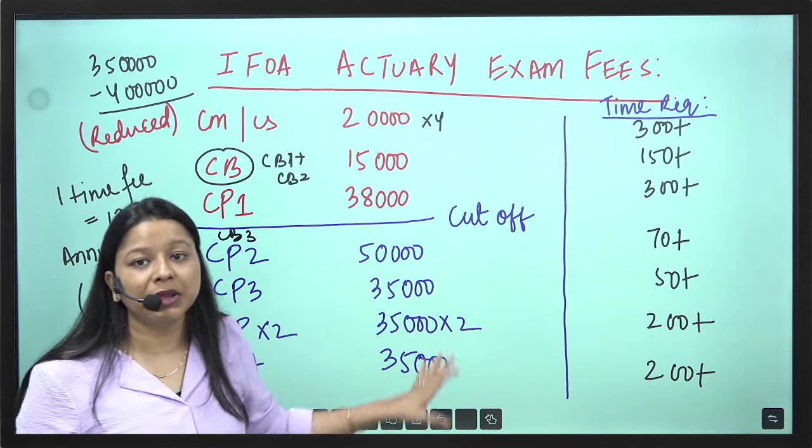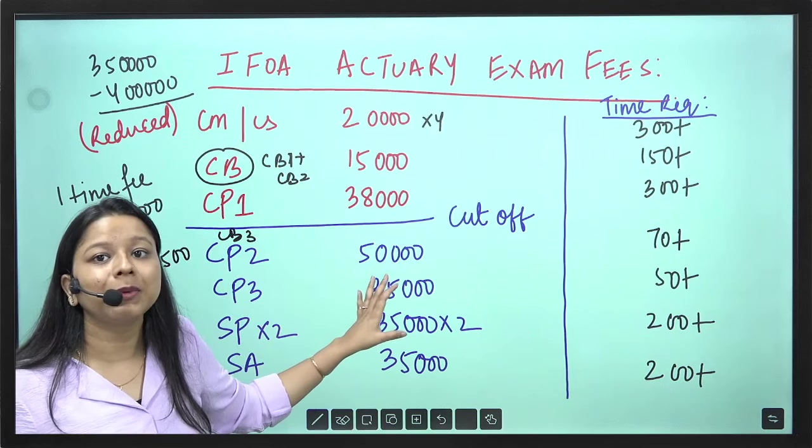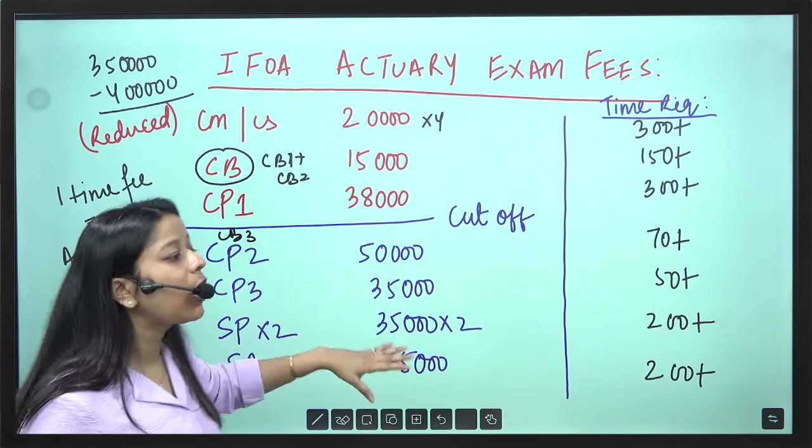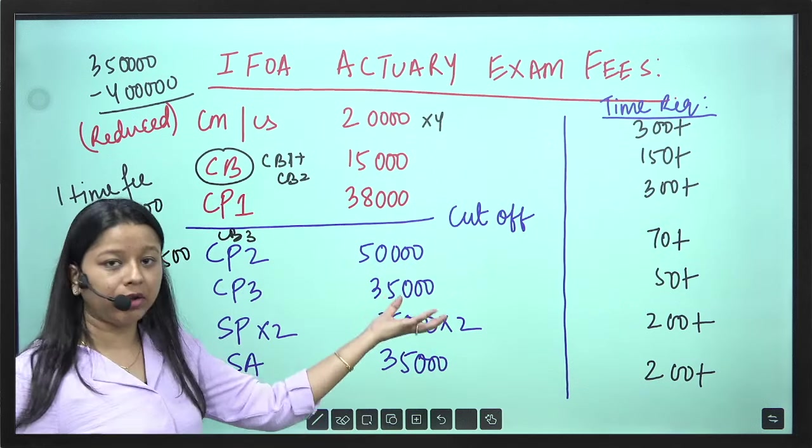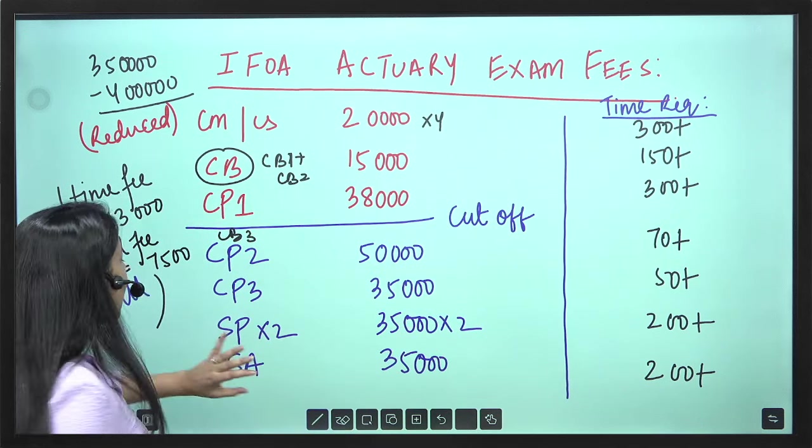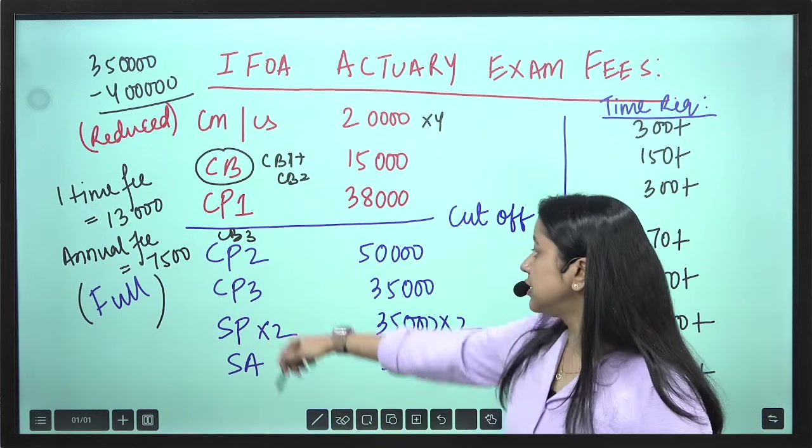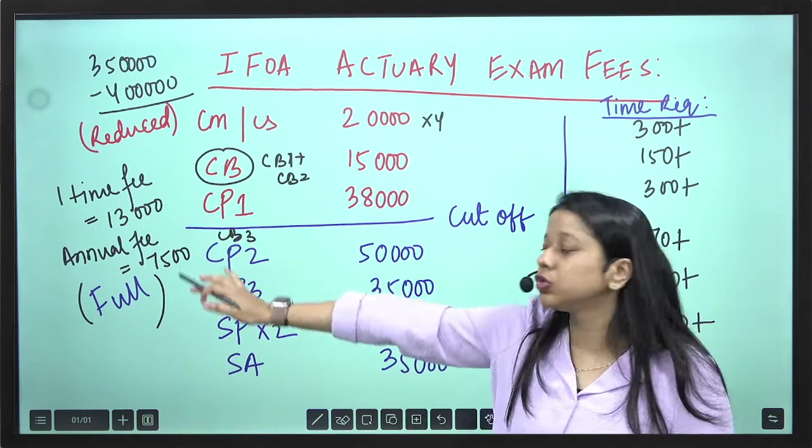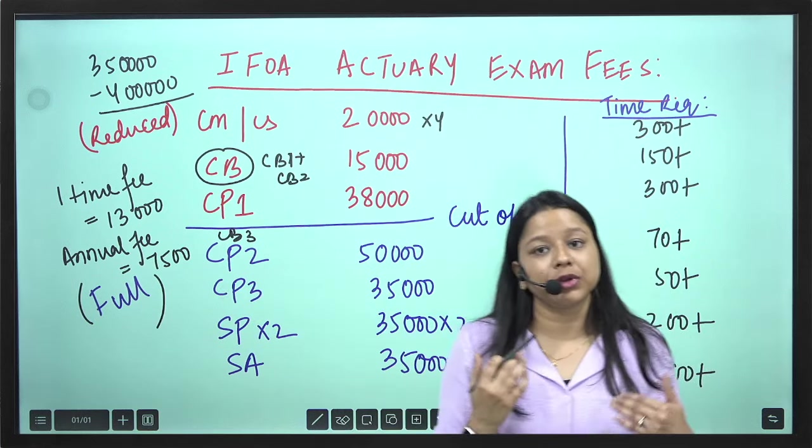So if you are appearing these papers as a student and you are eligible for reduced rate, then you will be paying somewhat very less of these amounts. These written in blue are your full fees. So CP2 is somewhere around Rs 50,000, CP3 is Rs 35,000, SP is Rs 35,000 each and SA will be again Rs 35,000. So this is we have assumed that you are working and so not be eligible for reduced rate and these are the different fee structure when you are appearing in the full rate.